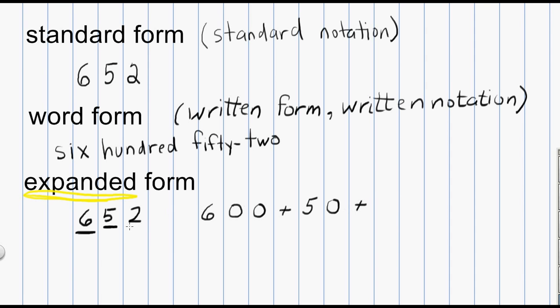And then finally, we'll go to the next place, which is the 2, which is in the ones place. Because the 2 is in the ones place, its value actually is 2. So 652 written in the expanded form is 600 plus 50 plus 2.